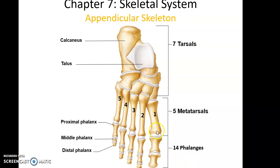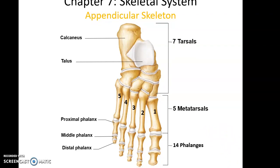Distal to the metatarsals are the phalanges. There are 14 phalanges making up the toes. They are referred to as proximal, middle, and distal — so for example, proximal phalanx 5, middle phalanx 5, distal phalanx 5. There are three phalanges per toe, except for the great toe, which only has two: proximal phalanx 1 and distal phalanx 1. Remember: 14 phalanges make up your five fingers, and 14 phalanges make up your five toes. A phalange is not a finger or toe — a phalange is a bone found in a finger or toe.